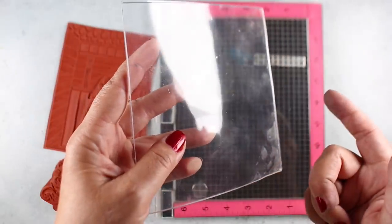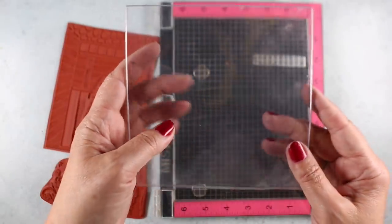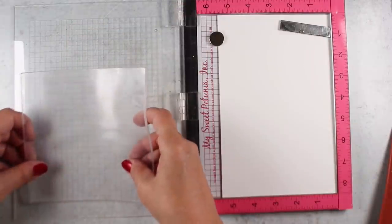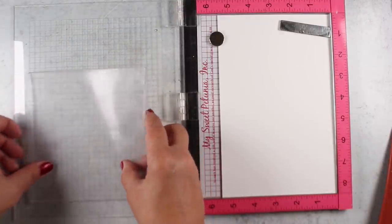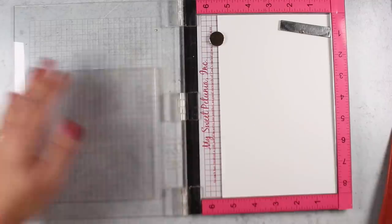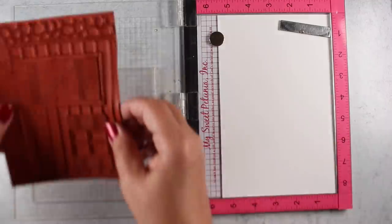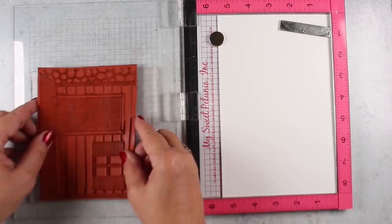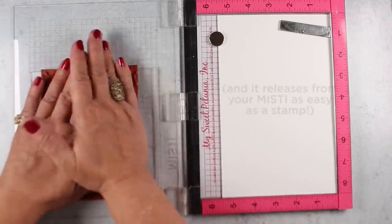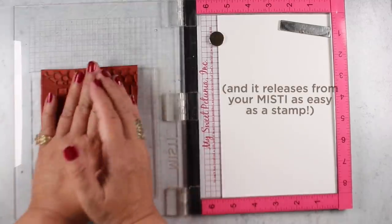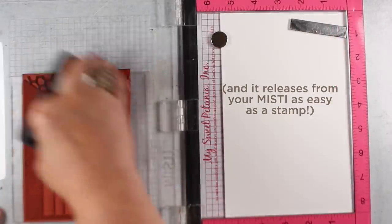So this is the stamp with the clear sheets on either side of it. And you can put it in your MISTI, you can put it on a block, you can do all kinds of things with it. But once you put this down, your red rubber stamps are going to stick to it. You no longer need to get easy mount and all that to mount your stamps. You just press it down and you can stamp away.